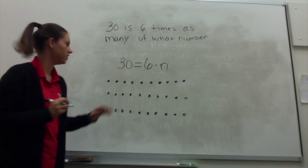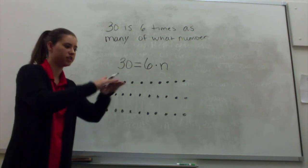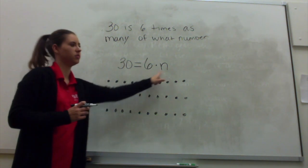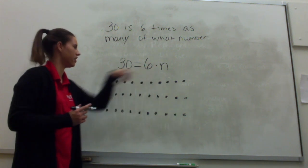All right, so now I want you and your group to practice grouping these into 6s to figure out what we're multiplying. What number are we multiplying times 6 to get 30?